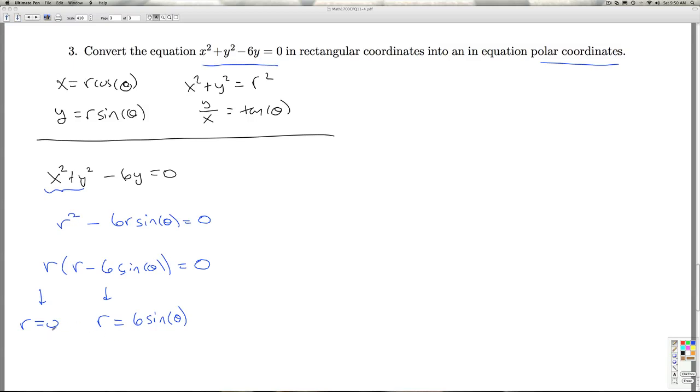When I think about which of these equations is going to give me the same set of points, I know from college algebra this is going to be a circle. In fact, I could complete the square and find out where the center is. r equals 0 is just going to describe the origin or the pole.